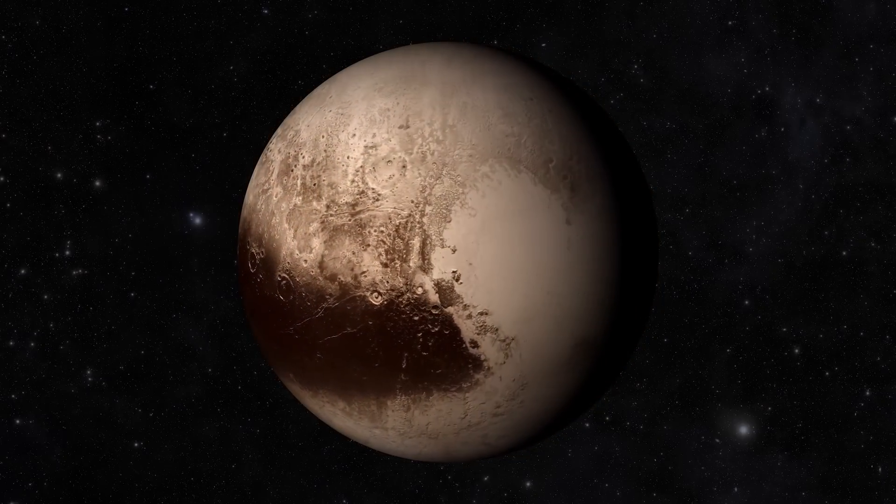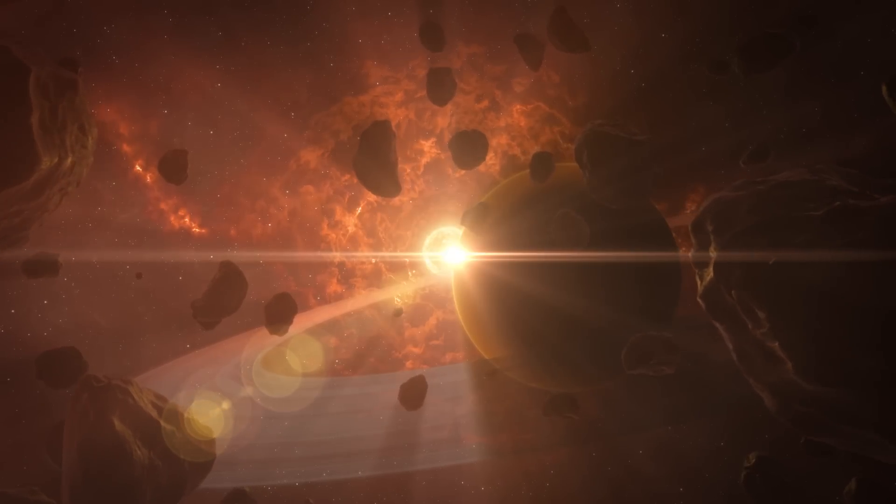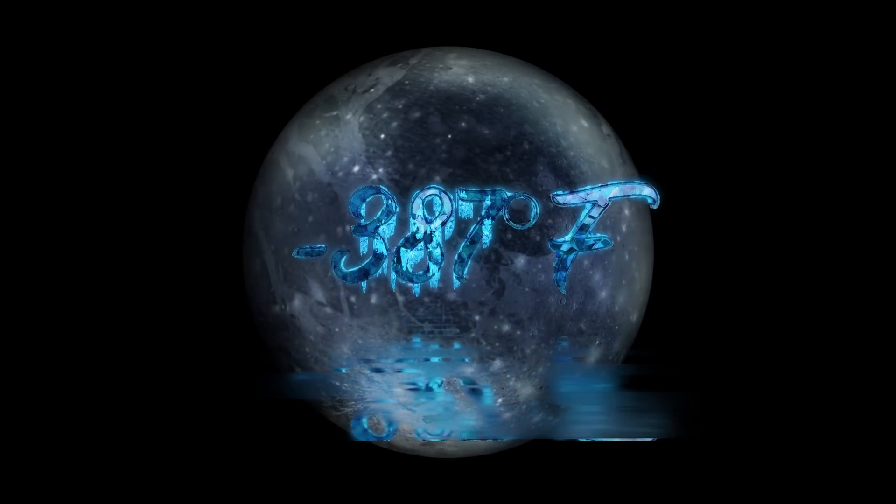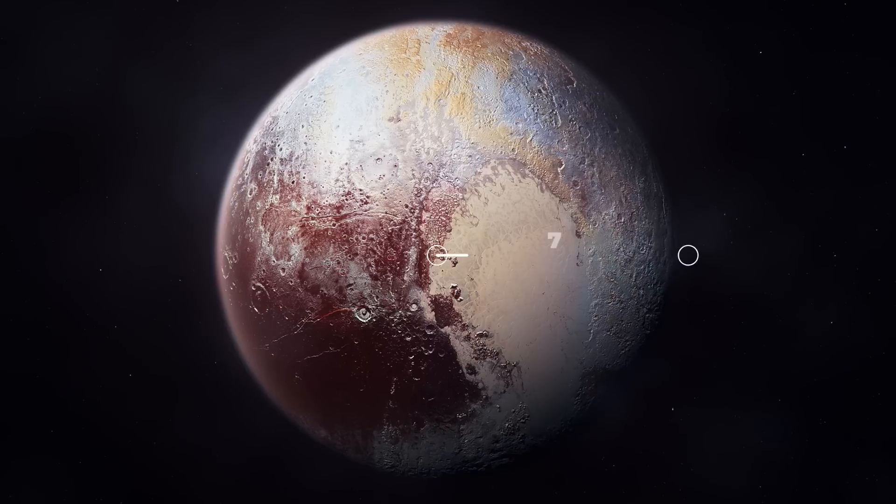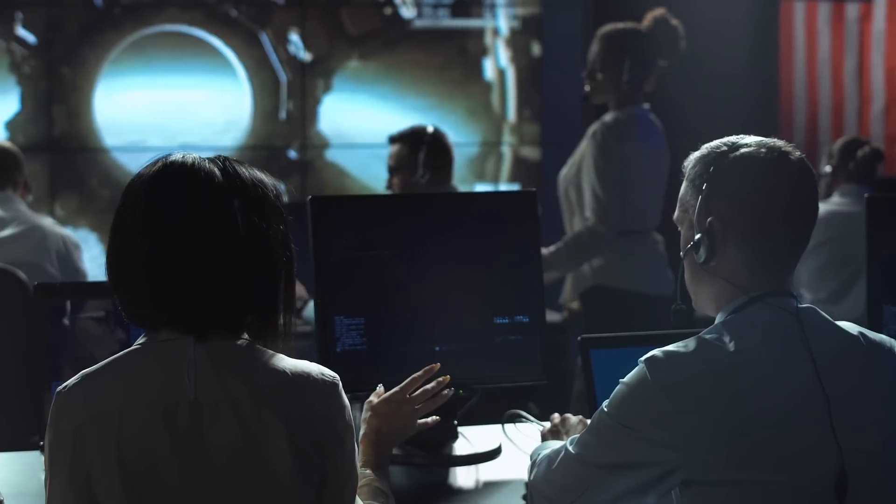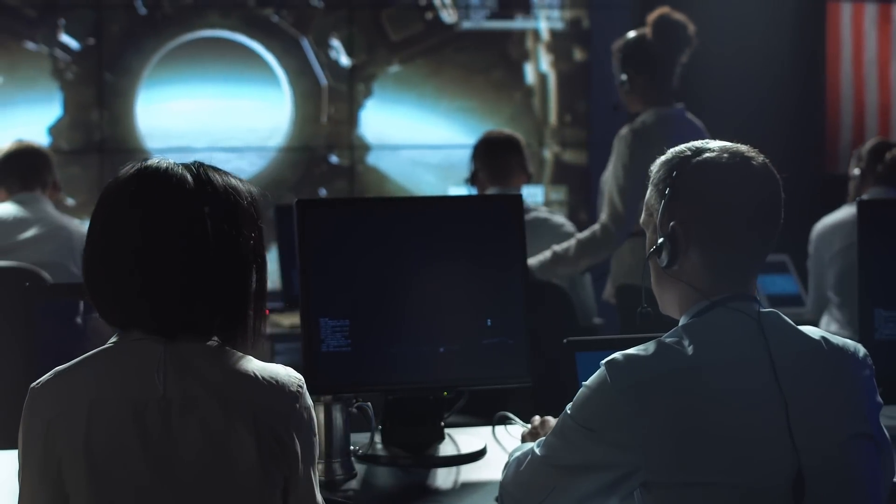Pluto, the most distant planet from the Sun, is known for its freezing temperature of minus 387 degrees Fahrenheit. With a radius of 738 miles, it was once considered a planet by NASA but later reclassified as a dwarf planet.